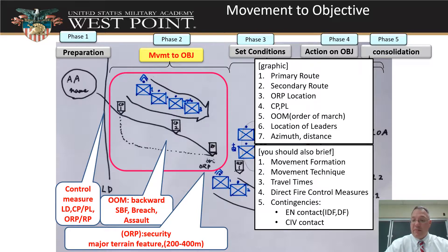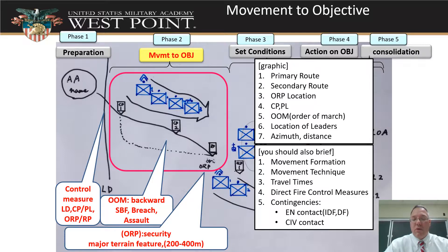Maybe something has to happen at a checkpoint, like making a report, letting our higher commander know, stopping to take a break — we can use those checkpoints. We want to make sure that when we get to the ORP, we address the location for security and where it is. In this case, it was kind of a rally point shown instead of an ORP. We're showing our route — there's a primary route in solid and then an alternate route in case something goes wrong. Checkpoints along the way and locations of leaders should be shown in the graphic.